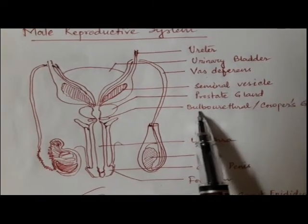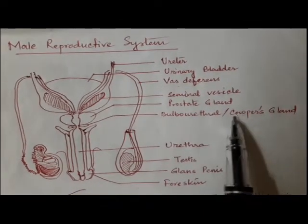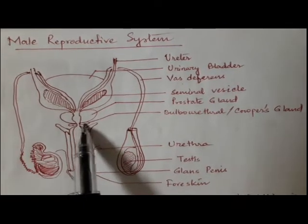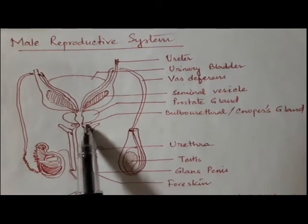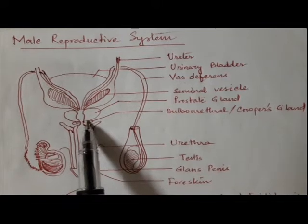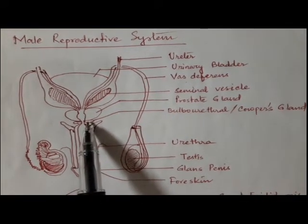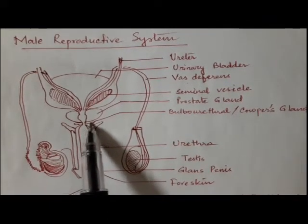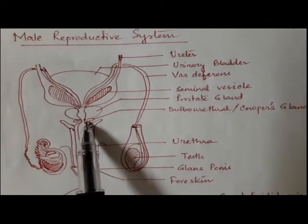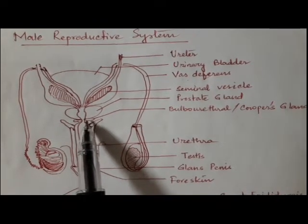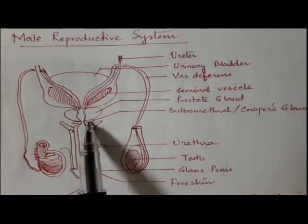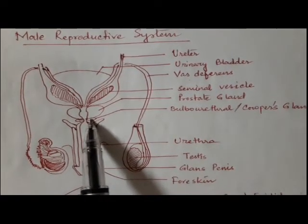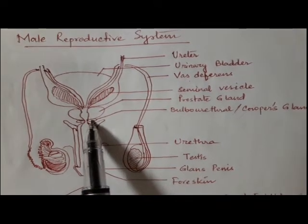Next, we talk about the bulbourethral gland or Cowper's gland. This is a very small gland — actually one centimeter in diameter, like the size of a pea seed. It is a pea-sized lobulated gland and it secretes abundant mucus that helps in lubricating the reproductive tract during copulation.